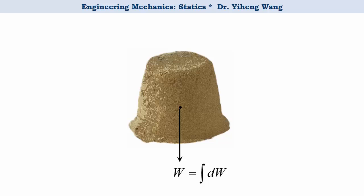We can use a concentrated weight force, W, to replace this distributed load, where W equals the integration of the differential weight dw. The two load systems must have the same magnitude of force, but this is not enough — they also have to create the same moment about any arbitrary axis. Therefore, this concentrated weight force must be positioned at a specified location to fully replace the distributed load as its equivalent system. This specified location is known as the center of gravity for this body, represented by point G.